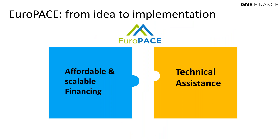Europace has two main pillars: on one side, affordable and scalable financing; on the other, technical assistance. We believe that financing without technical assistance cannot meet the goals we need to meet, because home renovation is complicated and time-consuming, and people are usually not experts on what elements to choose, how to do it, or when to do it. Having that technical assistance — a very people-centric approach — is absolutely key.